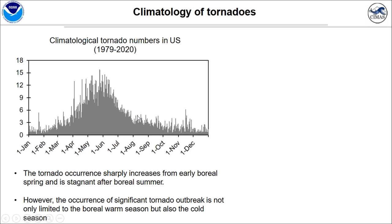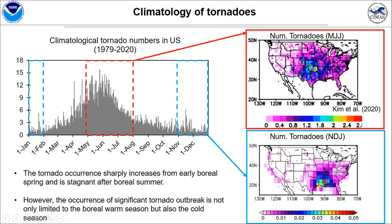This tornado activity has a large seasonality. This figure shows the daily climatological tornado number in the U.S. Tornadoes sharply increase from boreal spring and dramatically decrease after boreal summer. And this is the spatial pattern of the tornado genesis during May to July.